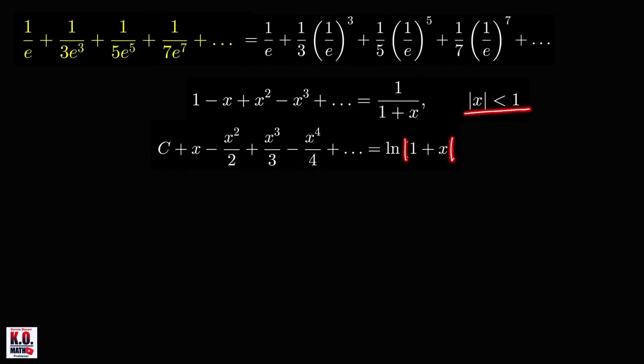But of course, because absolute value of x is less than 1, we may ignore the absolute value symbols. And don't forget to add the constant of integration in one side of our equation. Note that this equation here is also valid within the radius of convergence of the previous equation. So this is also valid for absolute value of x less than 1.